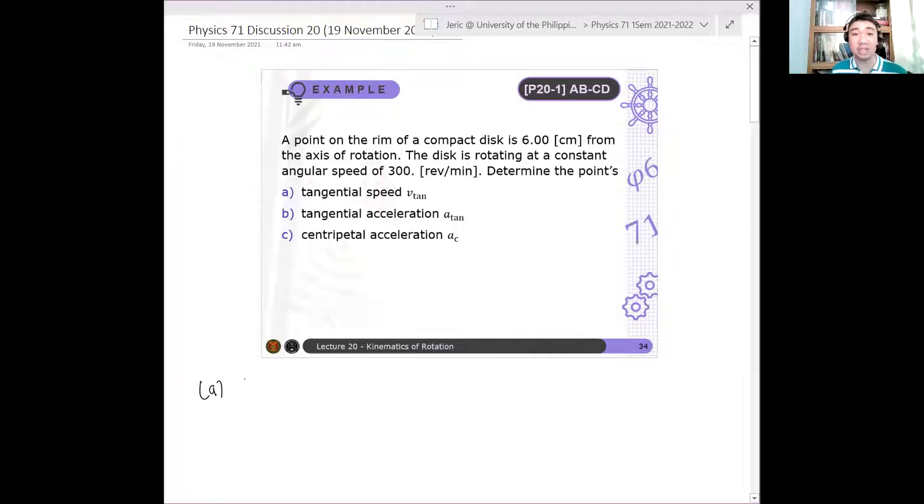So first, what we want is the tangential speed v_tan. So again, what's given here is you have a point on the rim of, let's say this is your CD - of course it should be a circle. And this is about six centimeters from the axis of rotation. So therefore the distance r is about 6.00 cm. So r equals 6.00 cm.